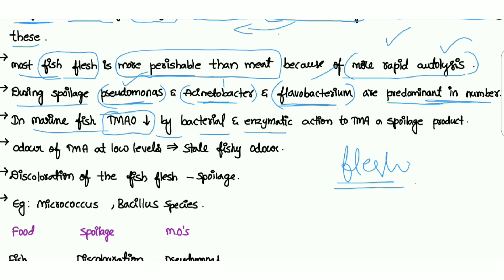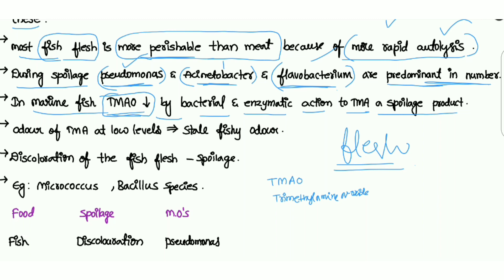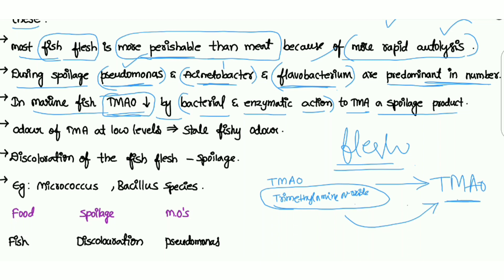In marine fish, TMAO (trimethylamine N-oxide) is reduced by bacterial and enzymatic action to TMA, which is a spoilage product. TMAO is an organic compound present in marine fish, and through bacterial and enzymatic action it is converted — reduced — into TMA.